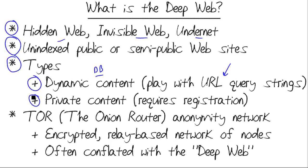There's also private content. Any site, whether it's a torrent tracker site or just an everyday garden-variety message board that requires registration, is going to prevent most web crawlers from getting to the content in those sites.